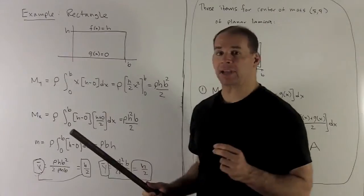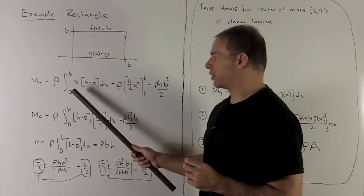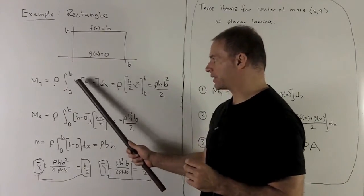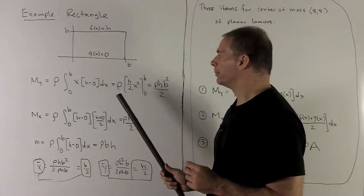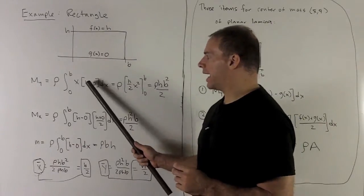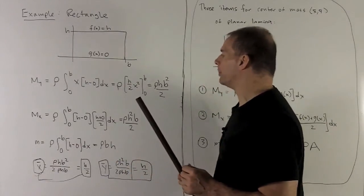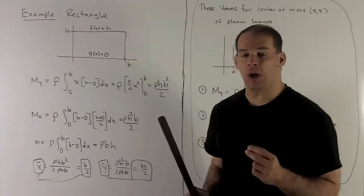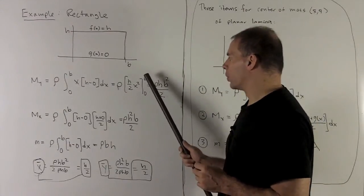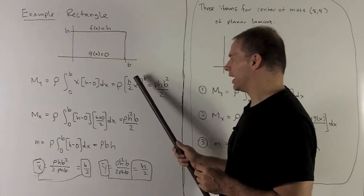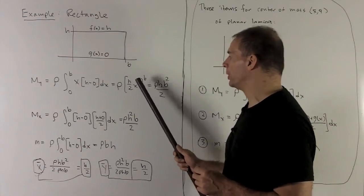For my moment about the y-axis, we have rho, definite integral from 0 to b, of x, top minus bottom dx. So the h, I can just pull out as a constant if I want. Antiderivative of x is one half x squared. So we're going to put our b into this, and I'm going to get h b squared over 2 times rho.